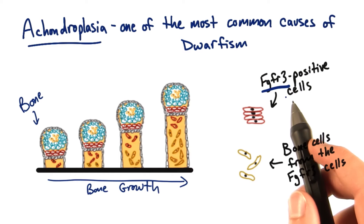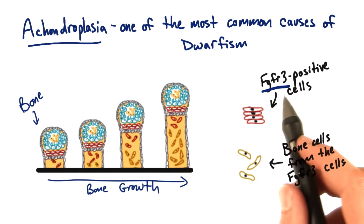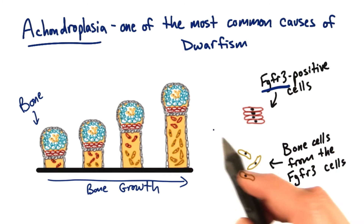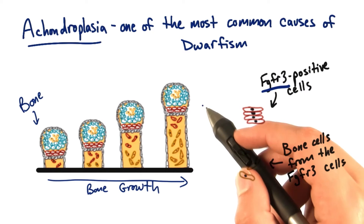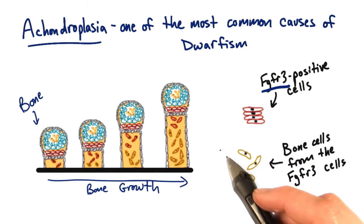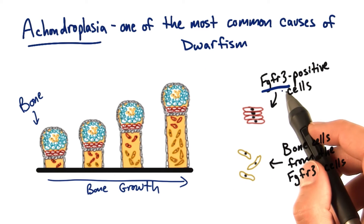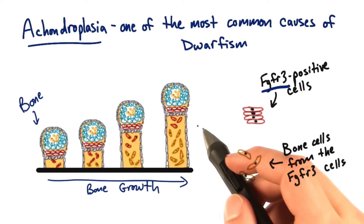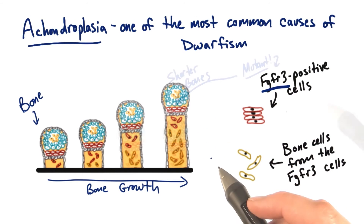In fact, signaling through FGFR3 in a cell keeps the bone from growing too long. An active FGFR3 protein prevents bones from growing even longer.